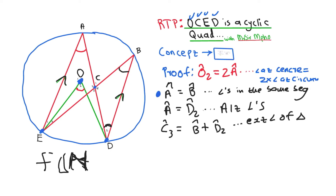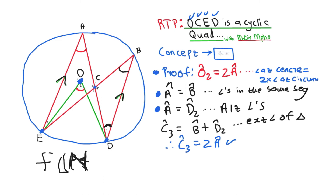From earlier steps, A equals B and A equals D2. So adding B and D2 is the same as adding A and A, which gives 2A. Therefore C3 = 2A. That's just basic algebra — substitution.